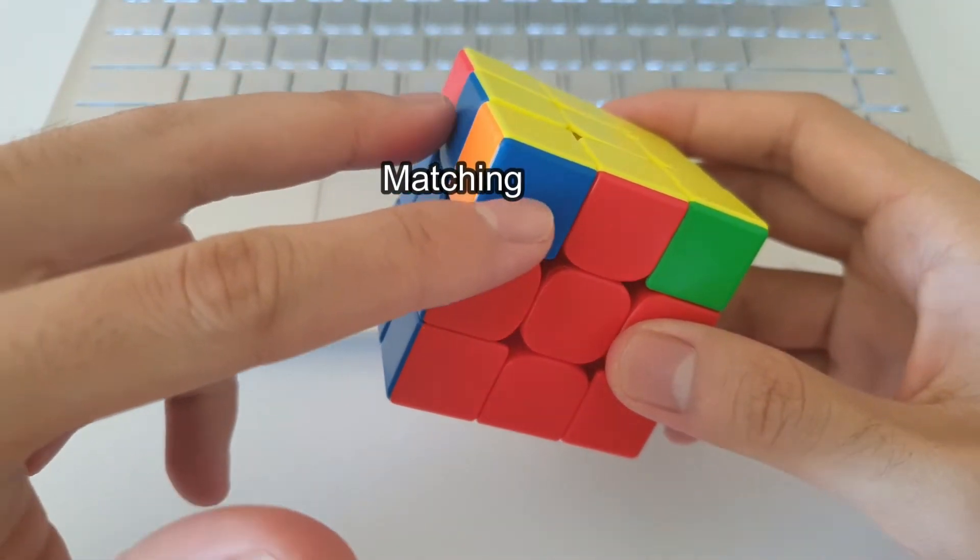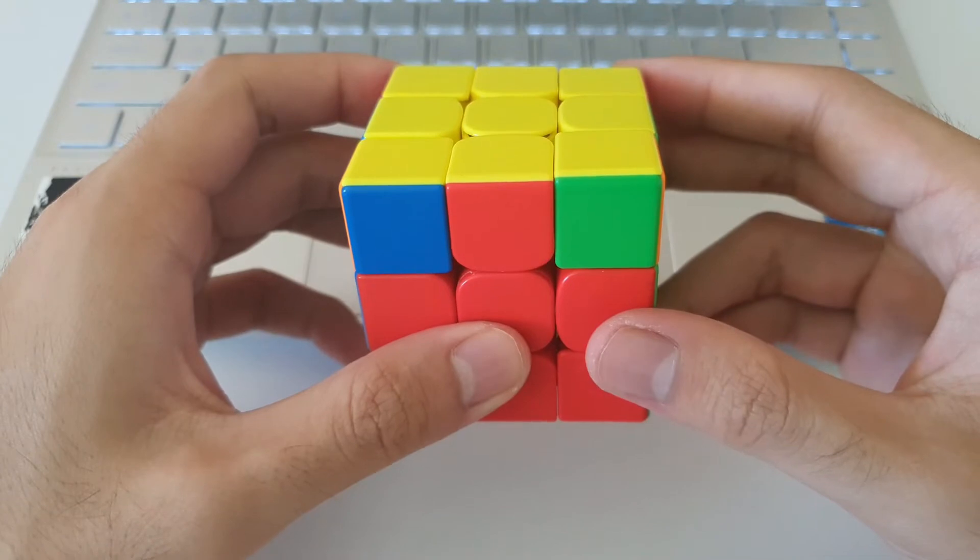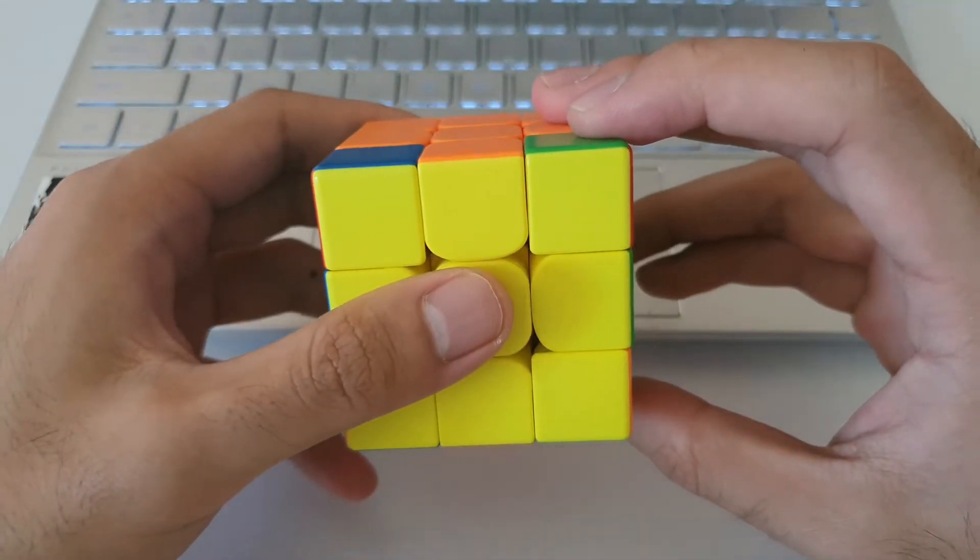So these two colors need to be matching. Same on the other side as well. So if these are matching, then you're facing the correct direction. You can just rotate upwards and do the algorithm.